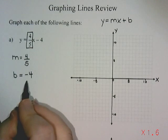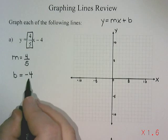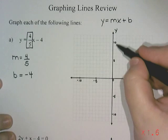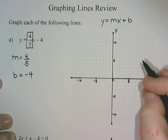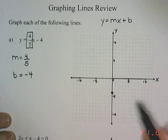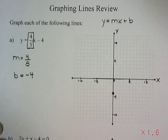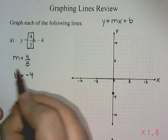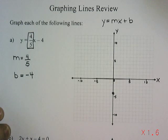So if we have a y-intercept of negative 4, that means on the y-axis, the vertical one, we're going to make a point at negative 4. That's where our graph is going to start. From there, we use the slope to help us figure out where the rest of the points go.